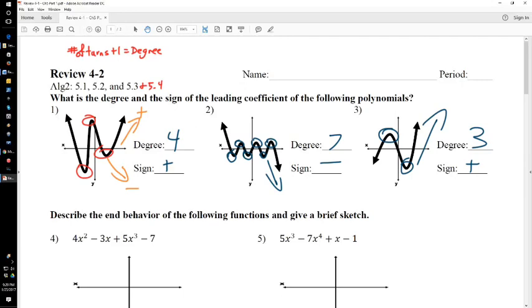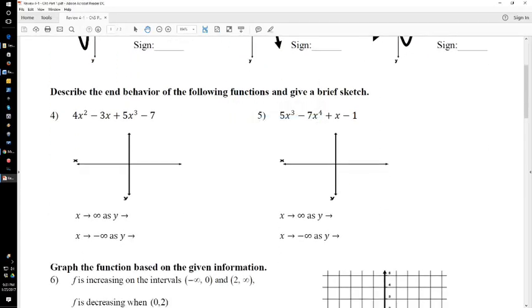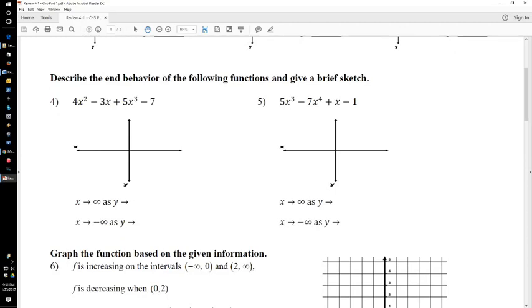Okay, number 4 and number 5, same idea, but we're going the other direction. So here we go. Number 4 and 5, it says, describe the end behavior of the following functions and give a brief sketch.